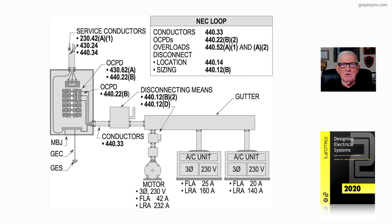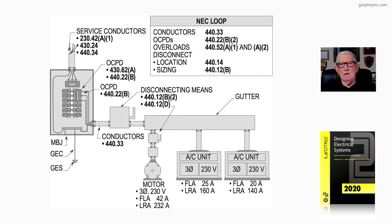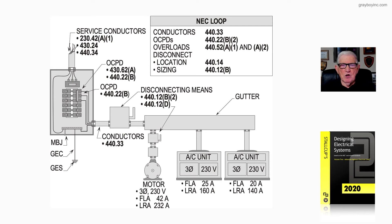The conductors would be sized by 440.33 based upon air-conditioners with motors, or air-conditioners with motors and other loads, or any combination. Now, in the illustration, we show one motor.